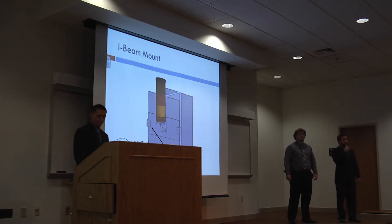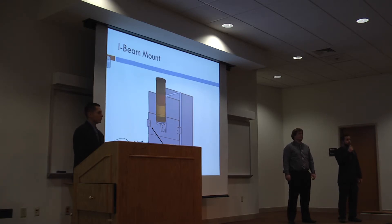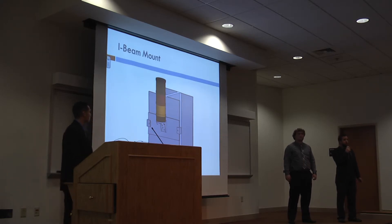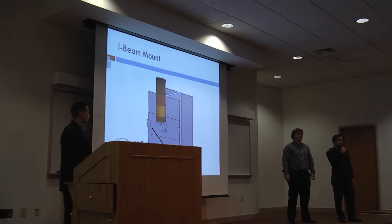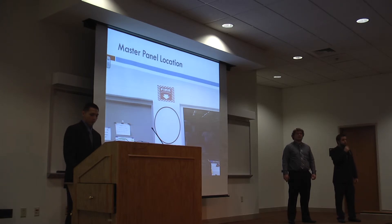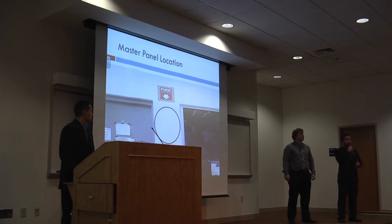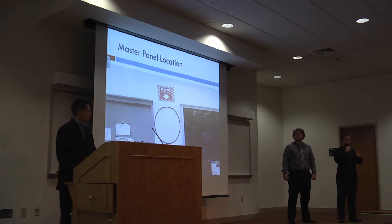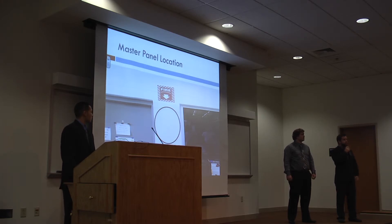This picture depicts how we will mount the stack lights to the I-beams. On both sides of the beam there's a beam clamp, which will be connected with a flat piece of metal, and on that flat piece of metal the stack lights will be mounted. This is where the master panel will be located — conveniently placed outside the offices. Currently there is a fire extinguisher in the way that will have to be removed and placed somewhere nearby. We chose this spot because it's the only wall large enough to fit our master panel.